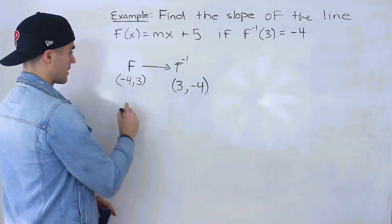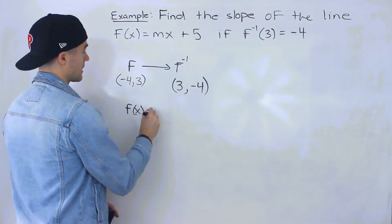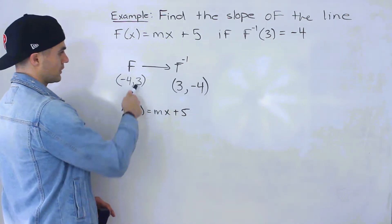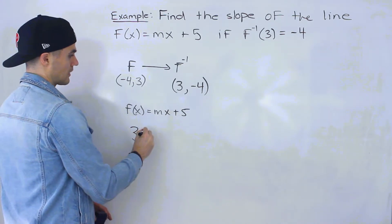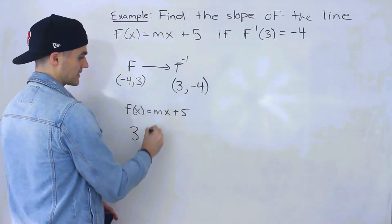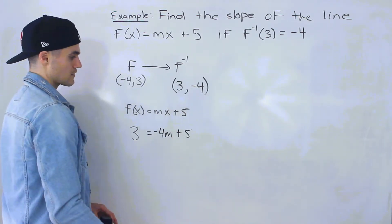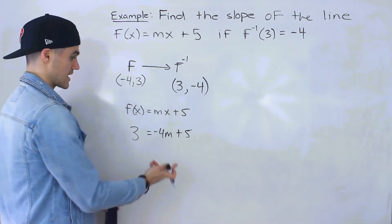Okay, so now pretty easy. We got f(x) = mx + 5. What we can do is plug in 3 for the y value and negative 4 for the x value. So we'll have 3 = -4m + 5. And then we just have to isolate for this m.